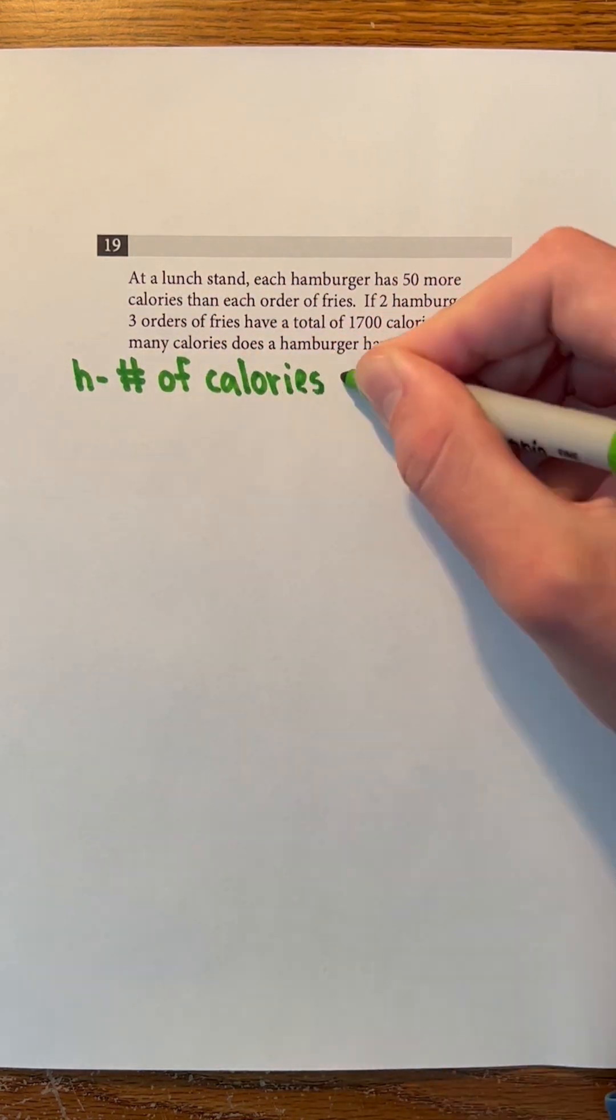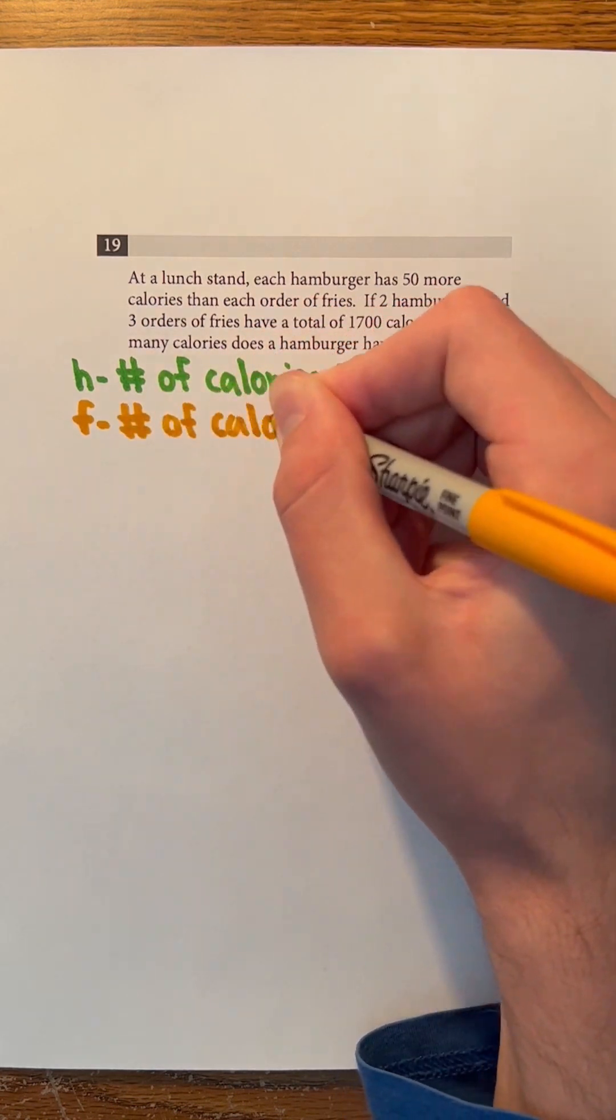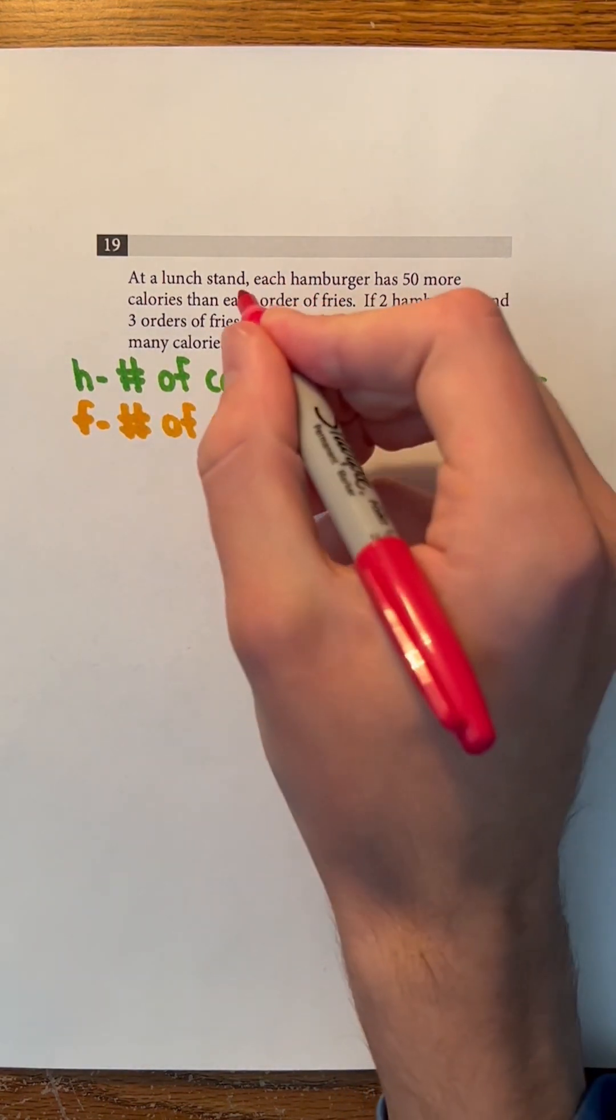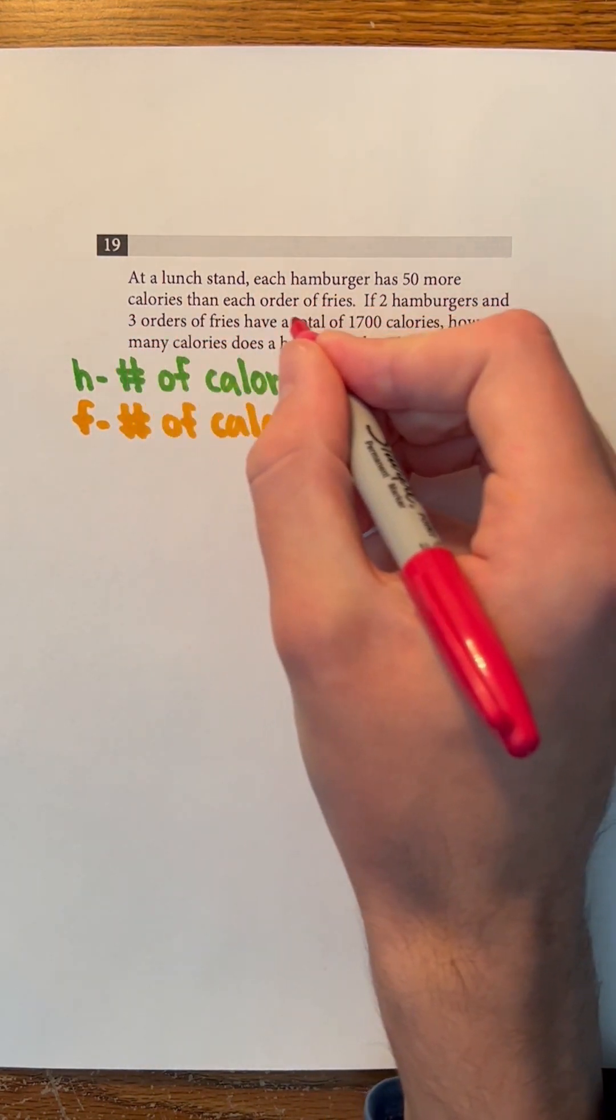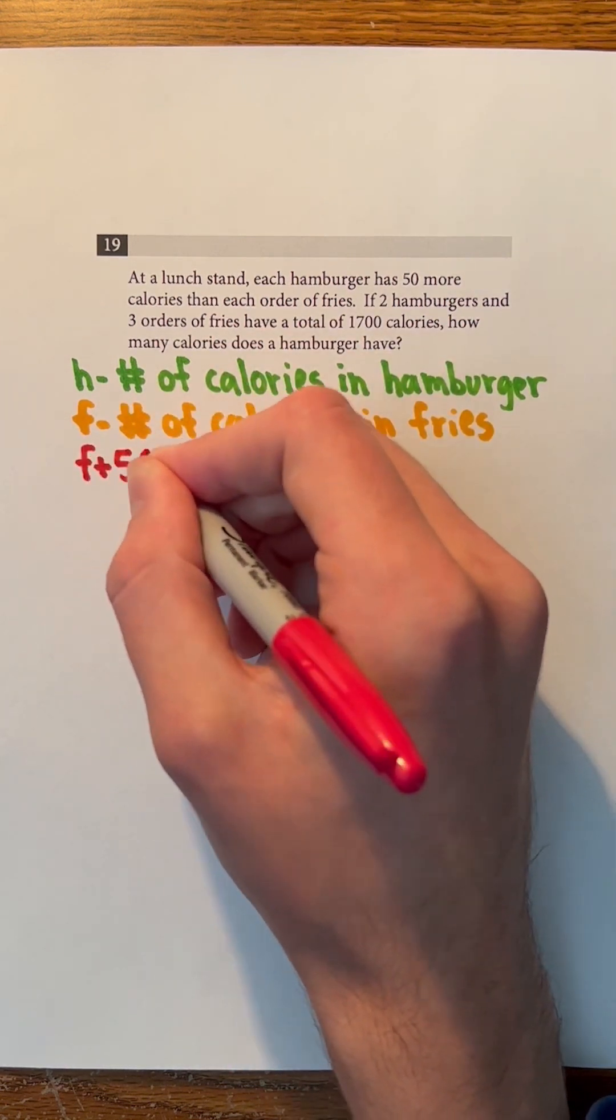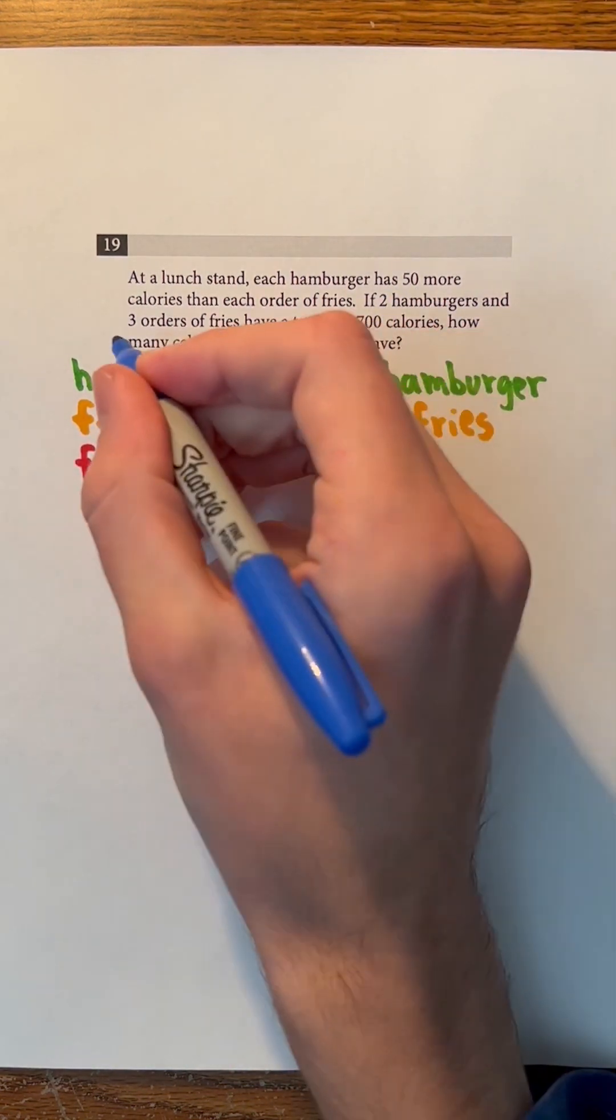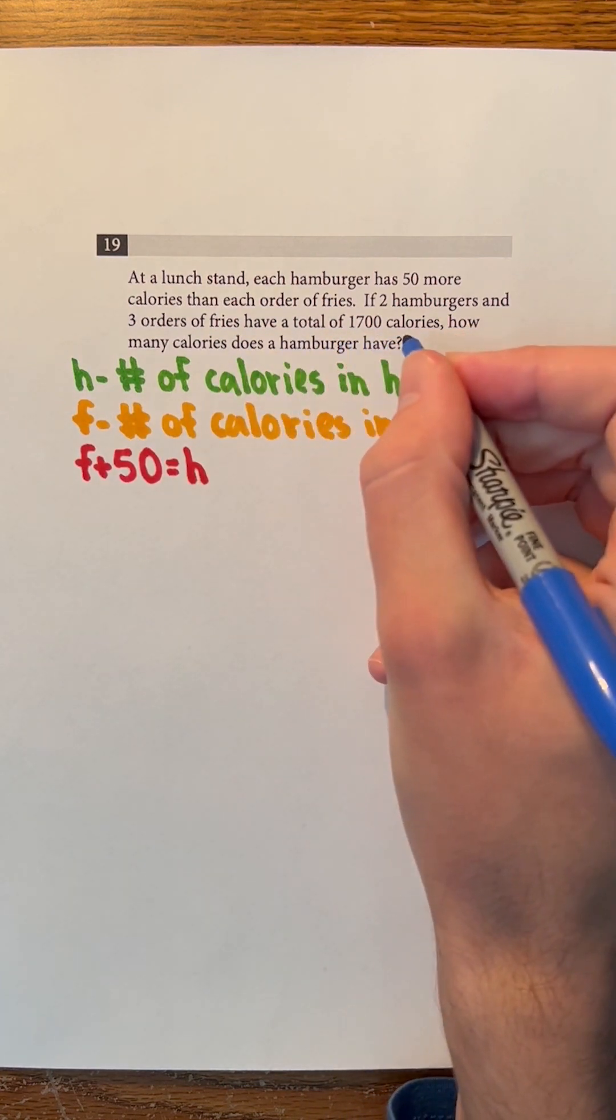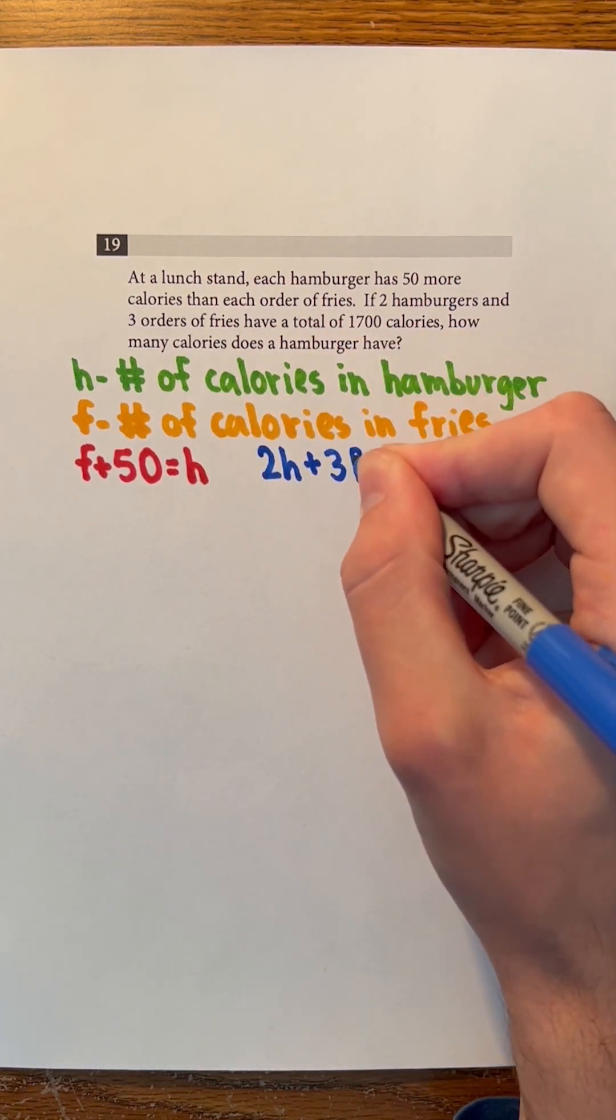Let H represent the number of calories in a hamburger and F represent the number of calories in an order of fries. Because each hamburger has 50 more calories than each order of fries, F plus 50 must equal H. And because two hamburgers and three orders of fries have a total of 1700 calories, 2H plus 3F must equal 1700.